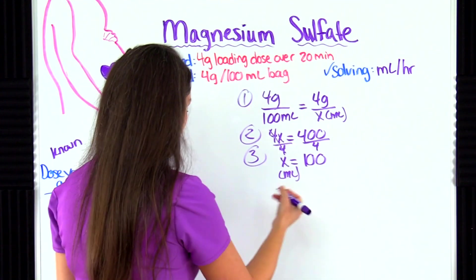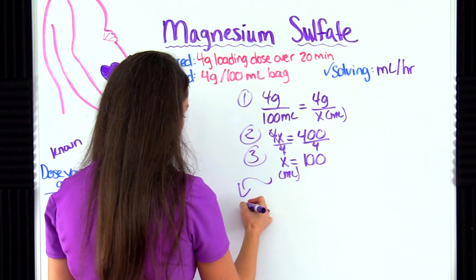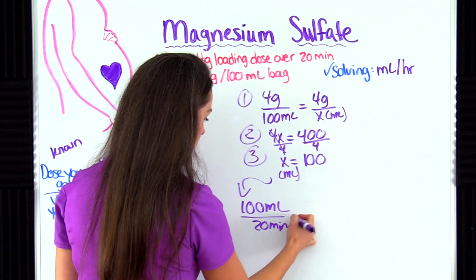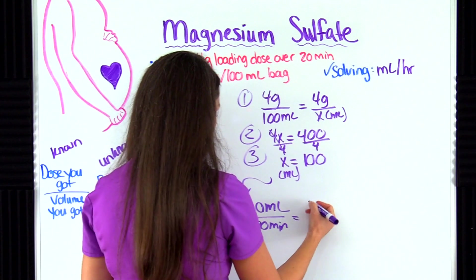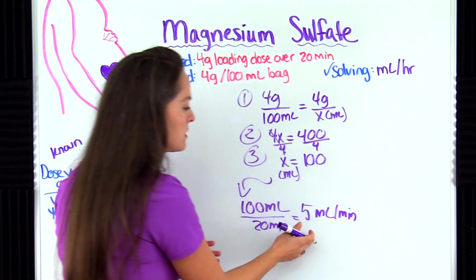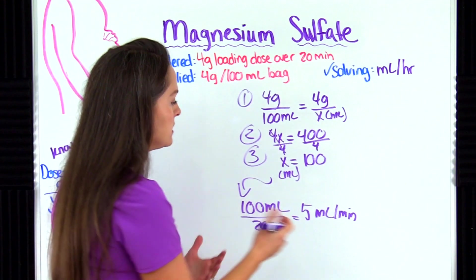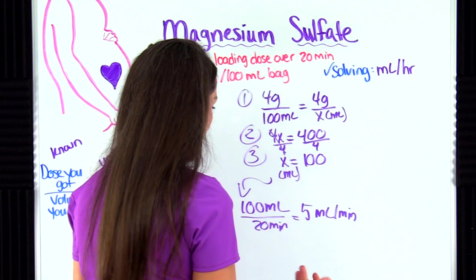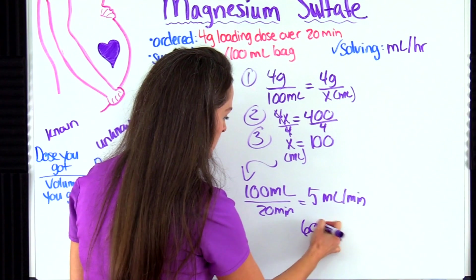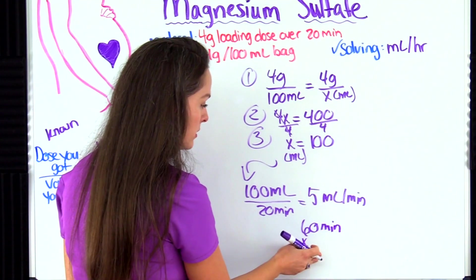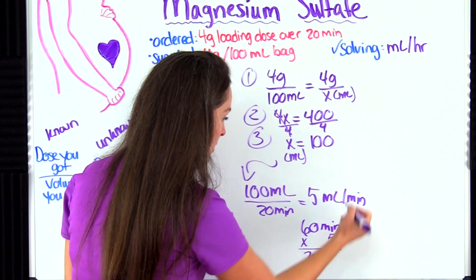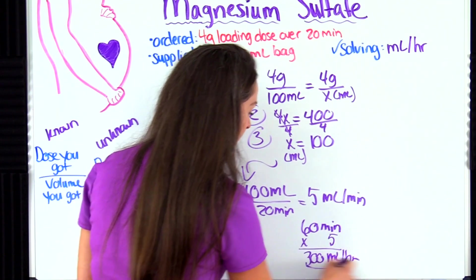To find milliliters per hour, we take our 100 milliliters over 20 minutes and divide: 100 divided by 20 gives us five milliliters per minute. Don't leave that as your answer — you need milliliters per hour. There are 60 minutes in one hour, so multiply five by 60, which gives us 300. Our answer is 300 milliliters per hour.